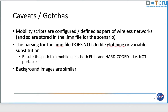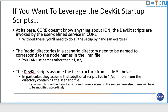Background images are similarly stored as full absolute paths — for example in scenario 2A Constant which had the black background with Earth on the left and Mars on the right. There isn't much that can be done to make those more portable.